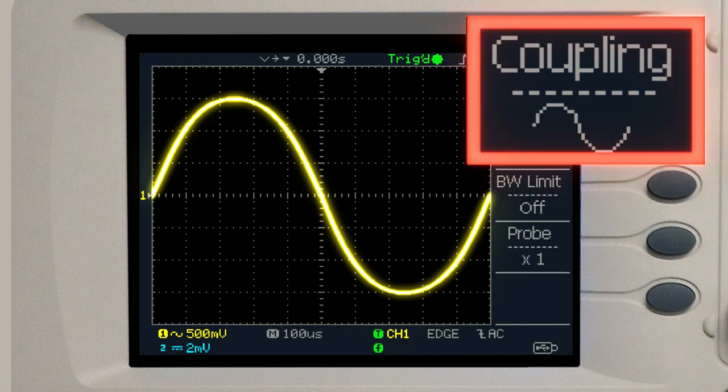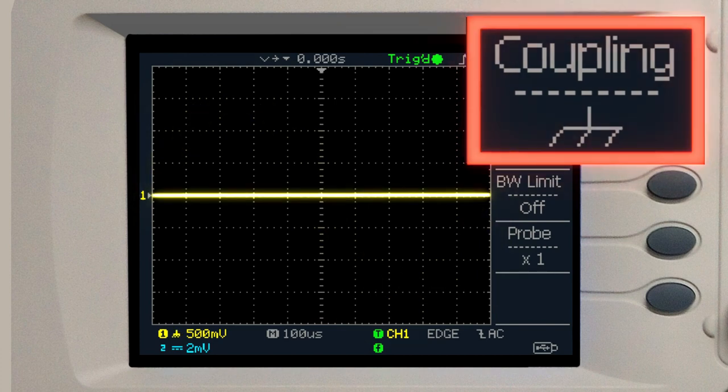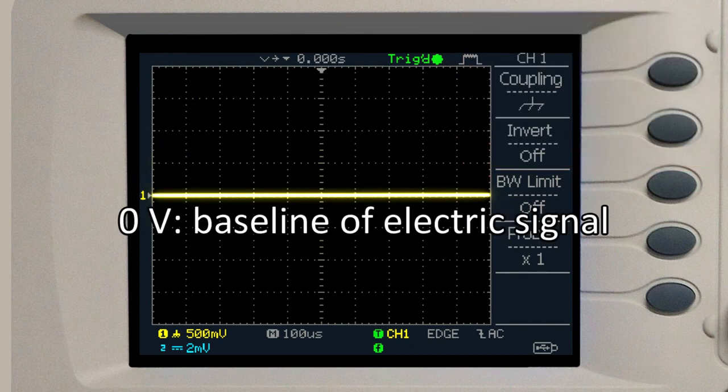Normally, you leave it at AC. But if you want to know where the zero volt is, you can set it to ground. The zero volt is the reference for the voltage of an electrical signal.